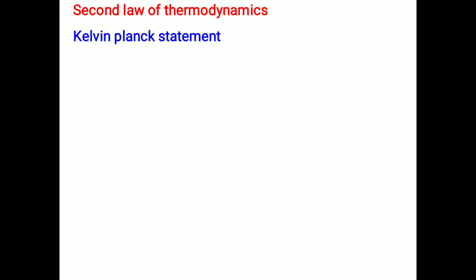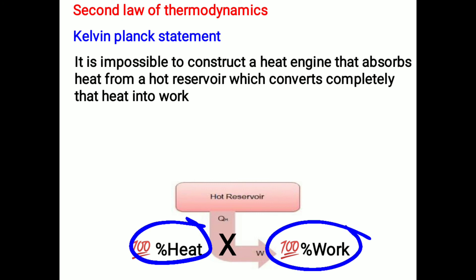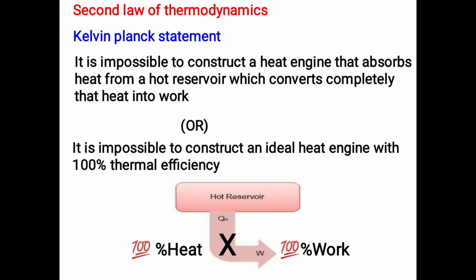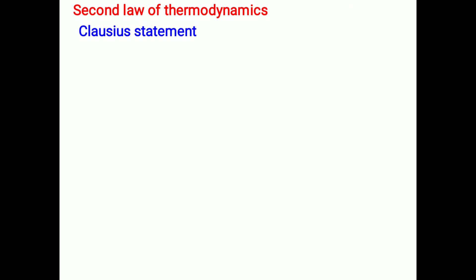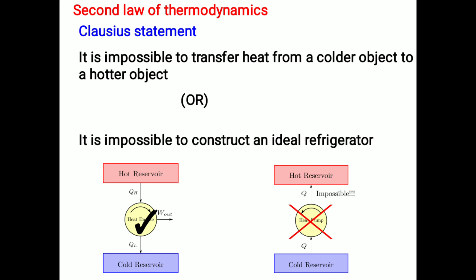Second law of thermodynamics: defined by different scientists. First, the Kelvin-Planck statement — it is impossible to construct a heat engine that absorbs heat from a hot reservoir and converts it completely into work. Simply stated: it is impossible to construct an ideal heat engine with 100% thermal efficiency. The Clausius statement: it is impossible to transfer heat from a colder object to a hotter object, or it is impossible to construct an ideal refrigerator.